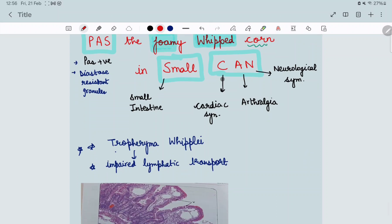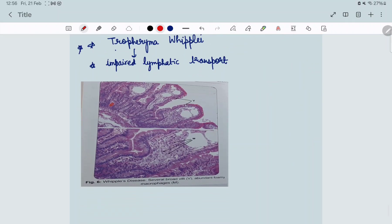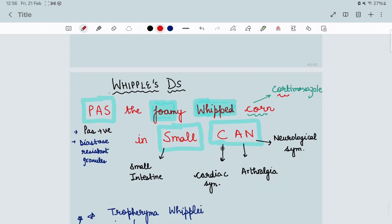Which organism is involved? Tropheryma whipplei is involved here. It impairs the lymphatic transport. You can see abundant macrophages, foamy macrophages in Whipple's disease. Drug of choice is cotrimoxazole. Just learn it by a very easy mnemonic: Pass the foamy whipped corn in small can. Very easy.